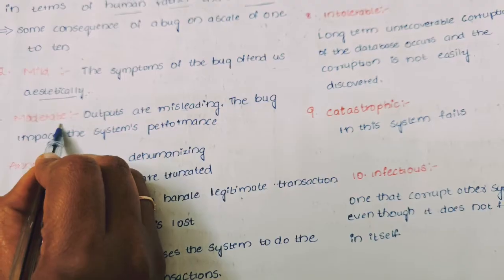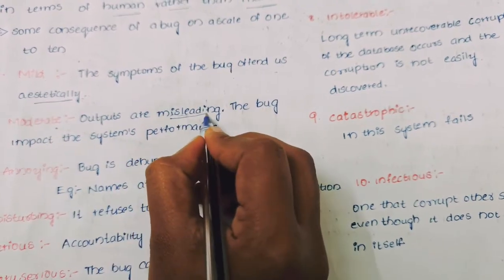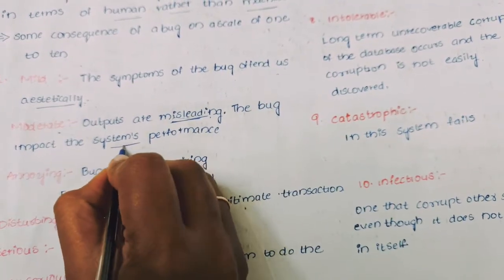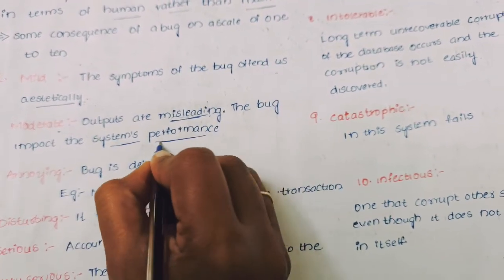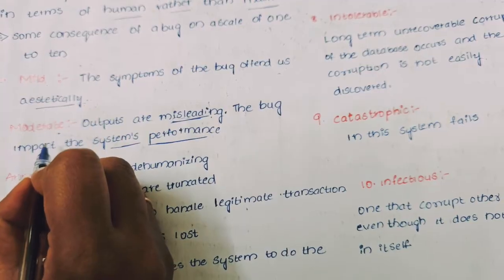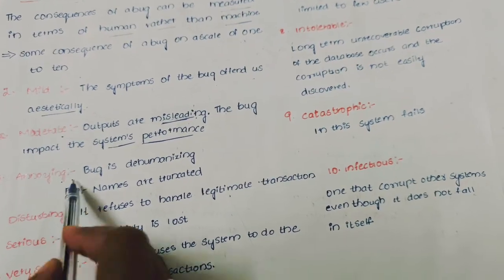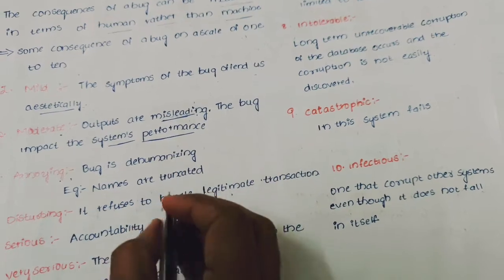Moderate, which is measured on a 1 to 10 scale: outputs are misleading, outputs are incorrect. The bug affects the system performance. Performance of the system can be affected by this moderate bug.